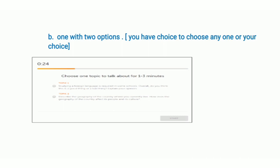The next independent speaking question gives you two options and you have to choose the one most convenient to you. If you don't choose on time, the computer will select the first option for you. Be very wise when selecting the question, and remember you have only 30 seconds to give your answer.